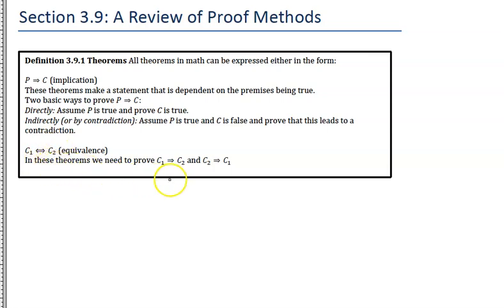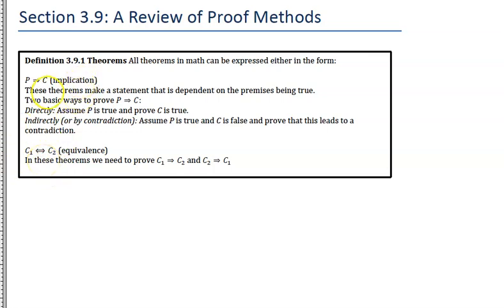For the equivalence, you need to do two proofs to show it works both ways: the implication if C1 then C2, and the implication if C2 then C1. Implication and equivalence are not the same thing — equivalence is a stronger relationship between premises and conclusions that can go either way. We'll start by looking at implication theorems and two basic ways of proving them.